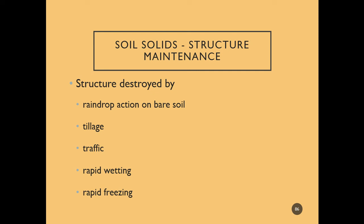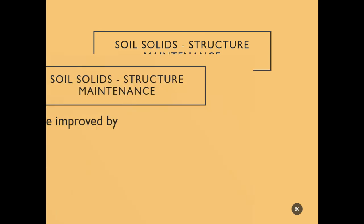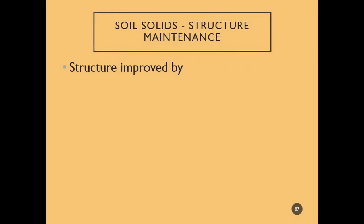Structure is destroyed by raindrops on bare soil — never want bare soil — as well as by tillage and traffic. Rapid wetting and freezing can also break apart those structures.